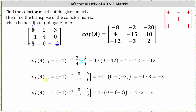Cofactor A sub three comma two is equal to negative one raised to the power of three plus two times the minor. If we eliminate row three, column two, the minor is the two by two determinant where row one is zero, three and row two is negative one, zero. The fifth power of negative one is negative one. The determinant is zero minus negative three, which simplifies to three. Negative one times three is negative three, the entry for row three, column two.